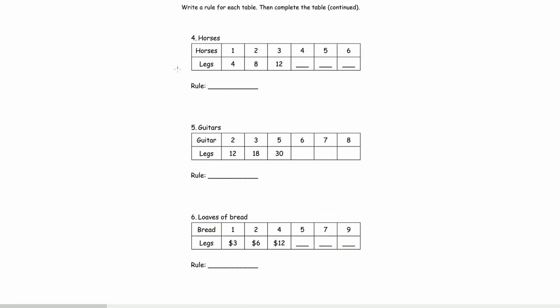Alright, let's continue. So we have 1 horse has 4 legs. So same thing, multiplication. 4 times 4 is 16. 4 times 5 is 20. 4 times 6 is 24. 1 horse has 4 legs.